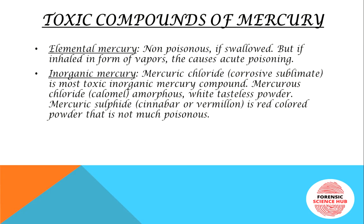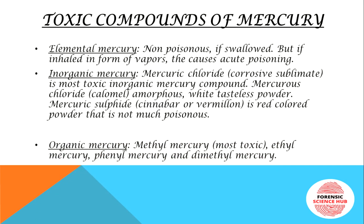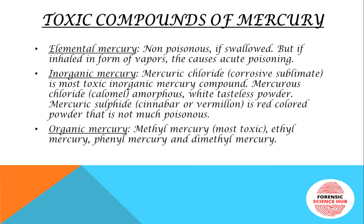Next comes inorganic mercury compounds. Mercury chloride is the most toxic inorganic form, also known as corrosive sublimate. Another compound is mercurous chloride, also called calomel — it is amorphous, white colored, and tasteless. Mercury also forms mercuric sulfide, known as cinnabar or vermilion — a red colored powder that is not very poisonous. For organic mercury, the compounds include methyl mercury, dimethyl mercury, ethyl mercury, and phenyl mercury. Of these, methyl mercury is the most toxic form of organic mercury.